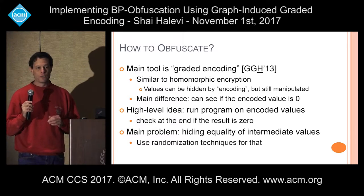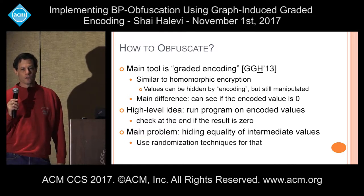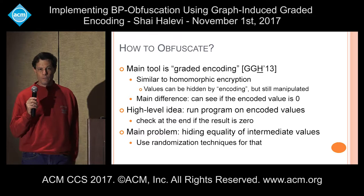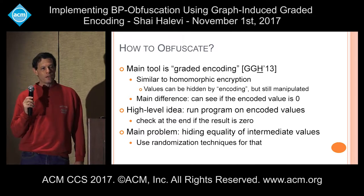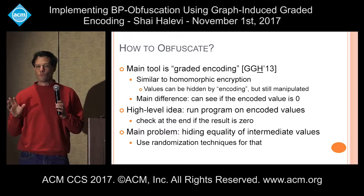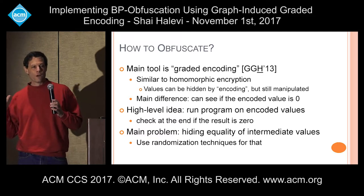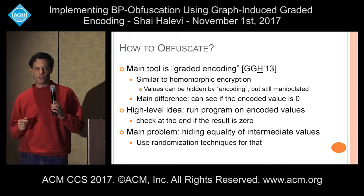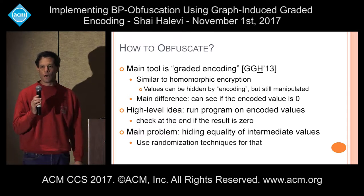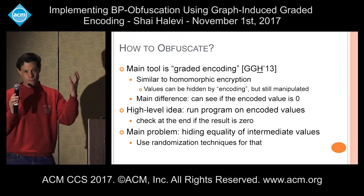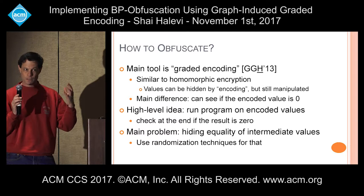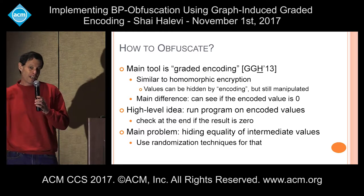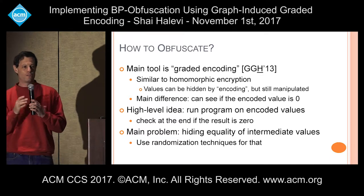The main tool for obfuscating the core is graded encoding, also called multilinear maps. These are sort of like homomorphic encryption: you can encrypt or encode the quantities you care about, they're hidden, but you can still manipulate them in encoded format. The main difference from homomorphic encryption is that once you have one of these encodings, if it happens to encode a zero you can see it. It's similar to discrete log — you can exponentiate and you don't know the exponent unless it's zero; if the exponent is zero you can look and see what you have.